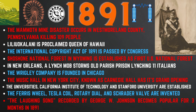Now we will cover the history of the year 1891. In 1891, the Mammoth Mine disaster occurs in Westmoreland County, Pennsylvania, killing 109 people. Liliuokalani is proclaimed Queen of Hawaii. The International Copyright Act of 1891 is passed by Congress. The Shoshone National Forest in Wyoming is established as the first U.S. National Forest. In New Orleans, a lynch mob storms Old Parish Prison, lynching 11 Italians. The Wrigley Company is founded in Chicago. Carnegie Hall in New York City has its grand opening. The California Institute of Technology and Stanford University are established. The Ferris wheel, Tesla coil, rotary dial, and Schrader valve are invented. The laughing song recorded by George W. Johnson becomes popular for three months in 1891.